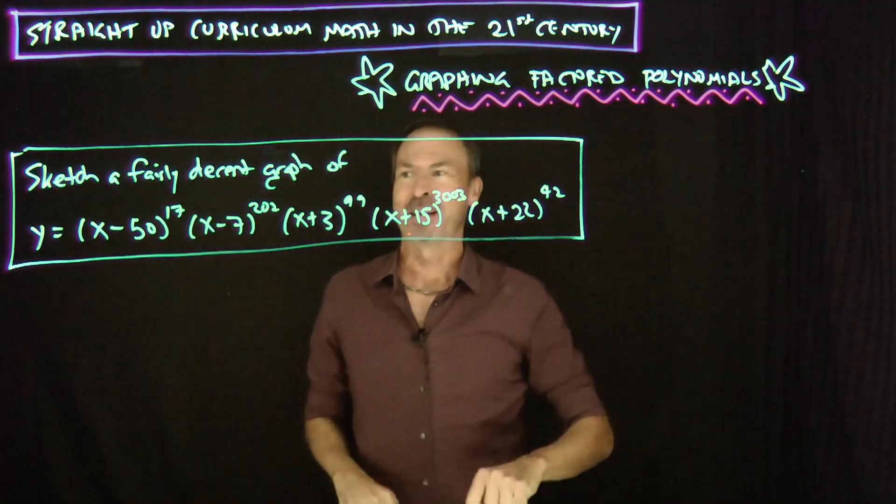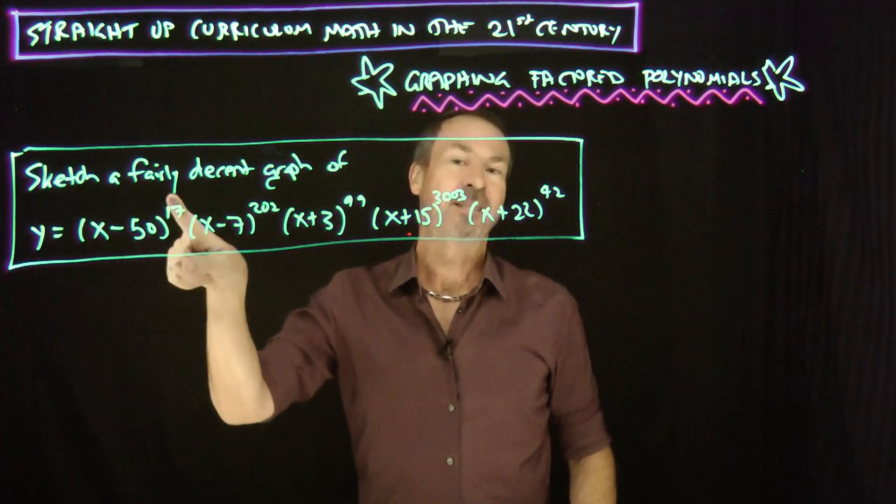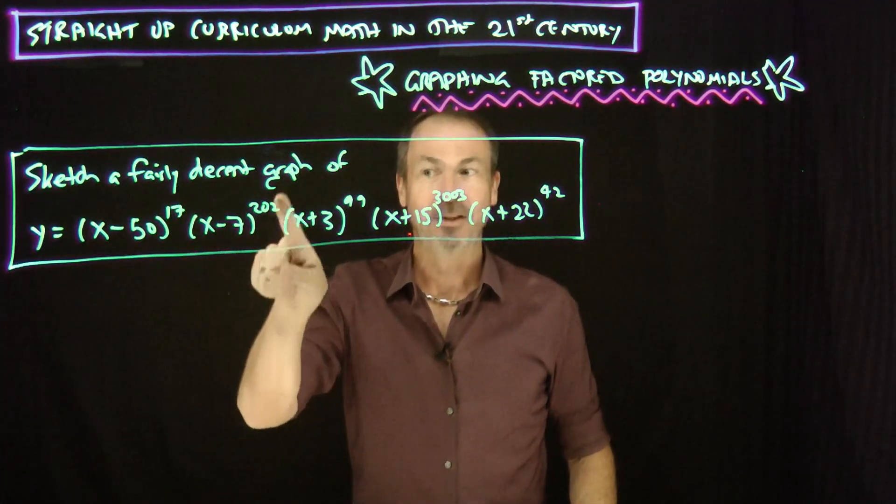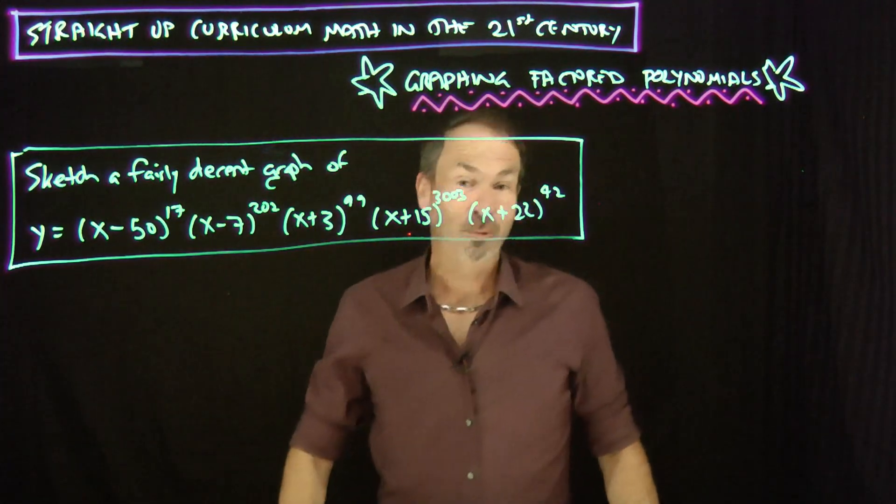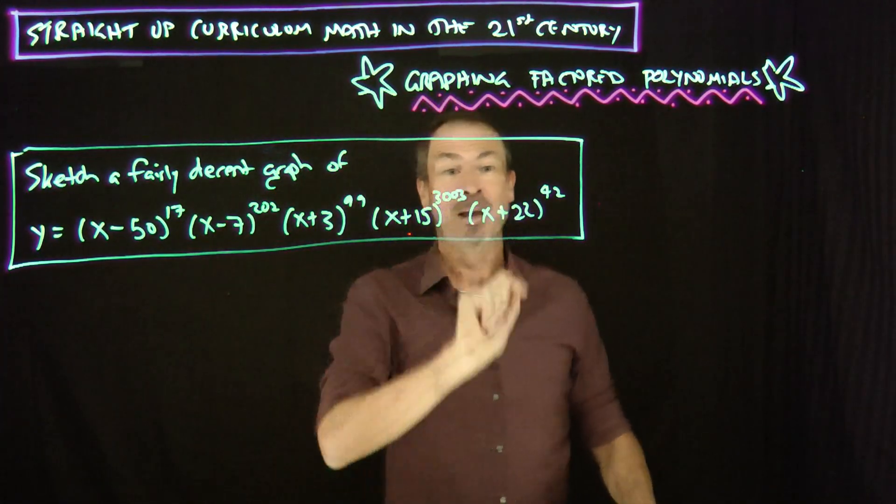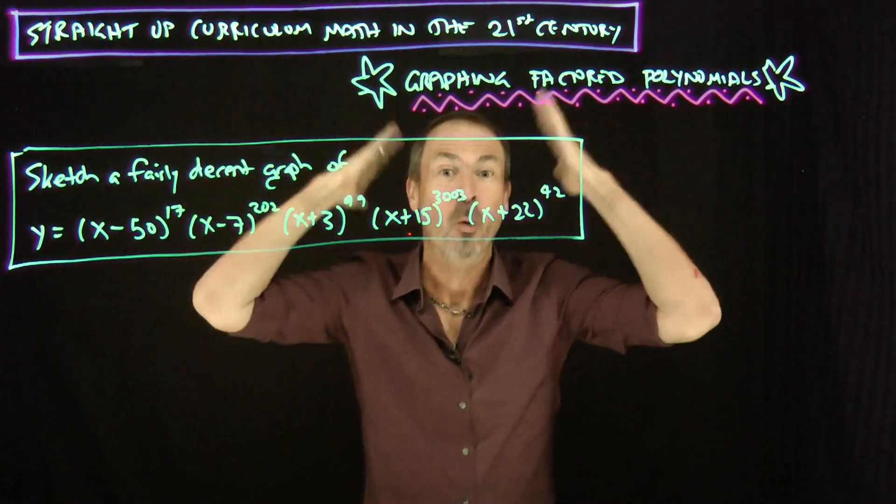Let's go for this particular graph right here. Please sketch a fairly decent graph of y equals x minus 50 to the 17th power times x minus 7 to the 202th power times x plus 3 to the 99th power times x plus 15 to the 3003th power times x plus 22 to the 42nd power. Whoa! Whoa!